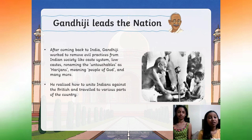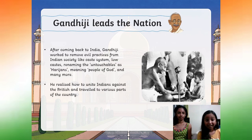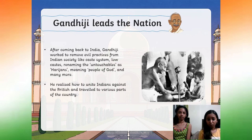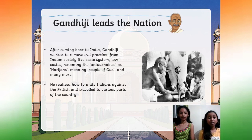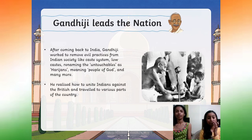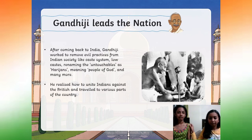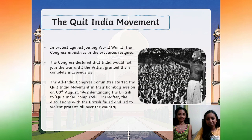Gandhiji leads the nation. After coming back to India, Gandhiji worked to remove evil practices from Indian society like the caste system and renaming the untouchables as Harijans, meaning people of God, and many more. He realized how to unite the Indians against the British and travelled to various parts of the country. By the way, if you are interested in Gandhiji, watch our video posted on Gandhiji from October 2nd last year — make sure to check it!